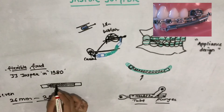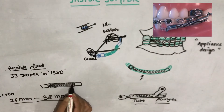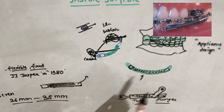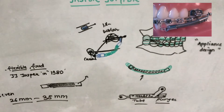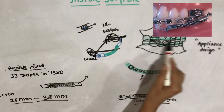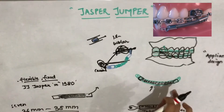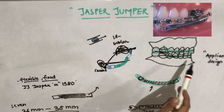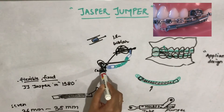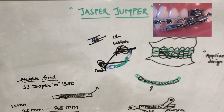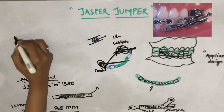The stainless steel caps at each end are attached to the fixed appliance on the maxillary and mandibular arches. The Jasper Jumper module is attached posteriorly on the maxillary arch and anteriorly on the mandibular arch. On the maxillary side, the module is attached posteriorly by a ball pin that passes through the facebow tube of the maxillary first molar, which has a band fitted around it.